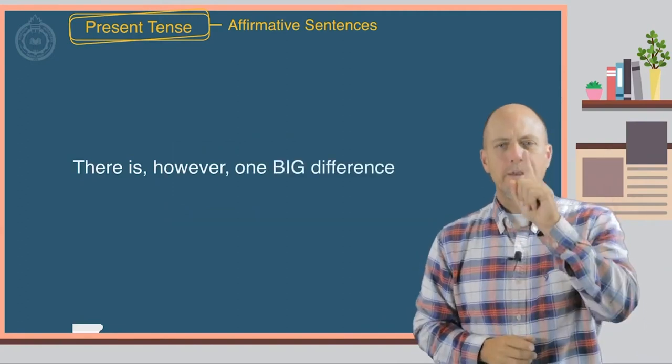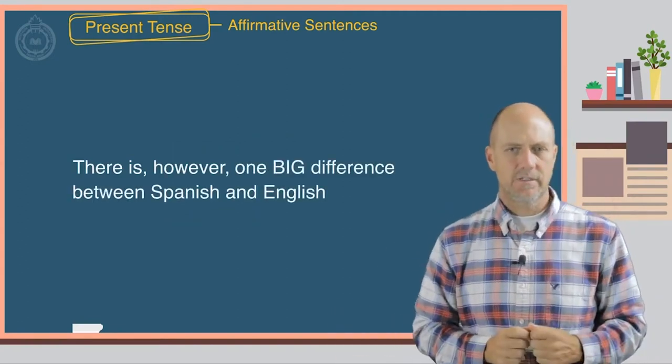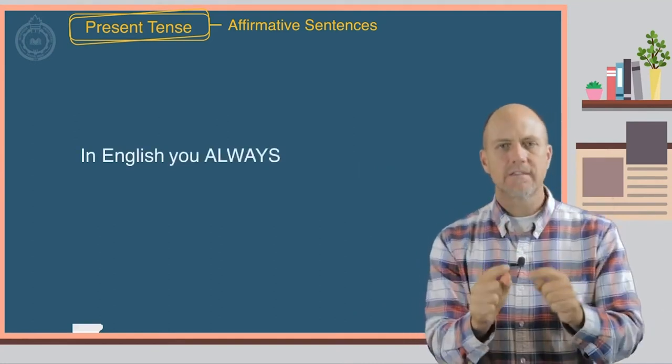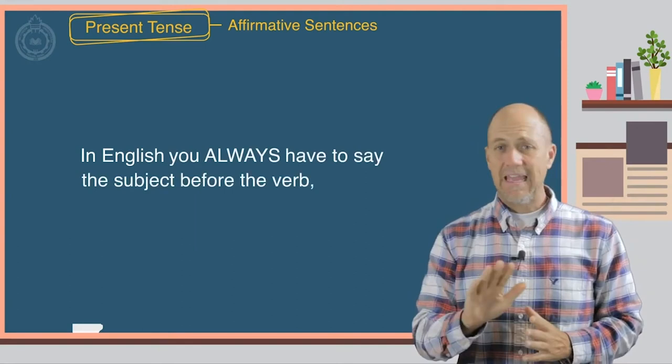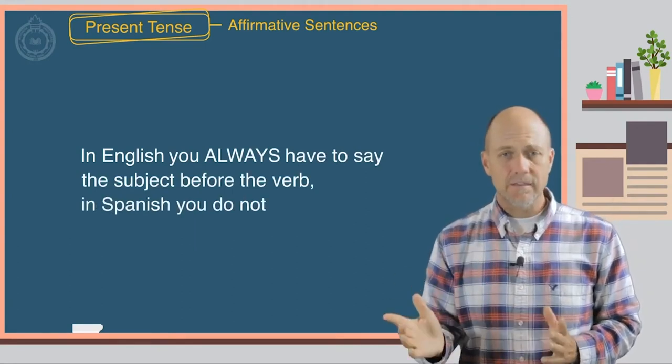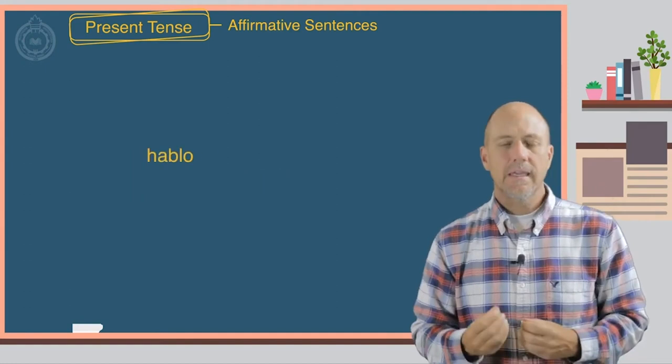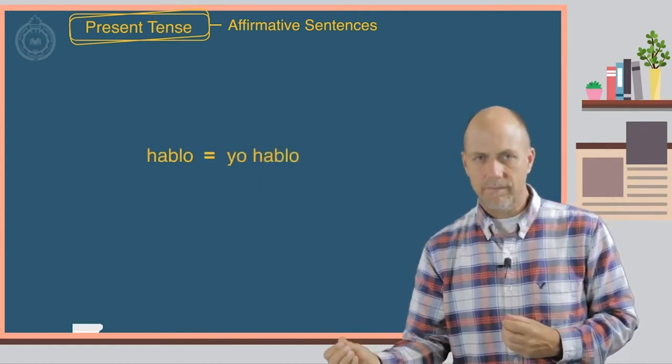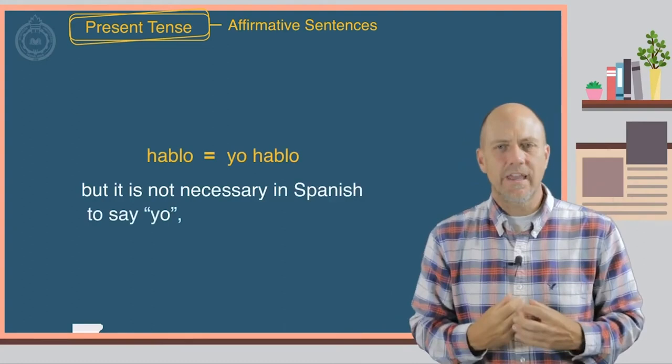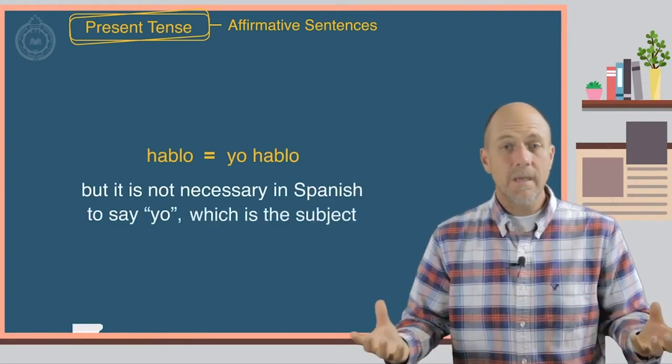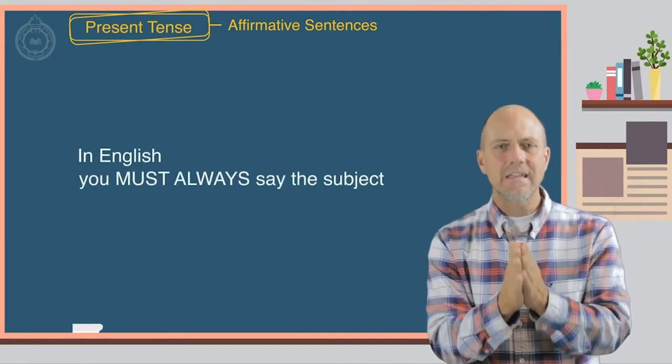There is, however, one big difference between Spanish and English. In English, you always have to say the subject before the verb. In Spanish, you do not. But here is an example, hablo equals yo hablo. But it is not necessary in Spanish to say yo, which is the subject. In English, you must always say the subject.